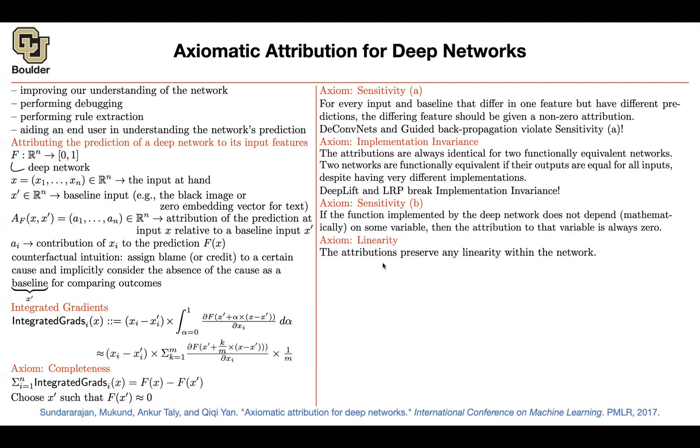It's going to satisfy linearity. If there are any linearity within your neural network, then these attributions are going to satisfy that.